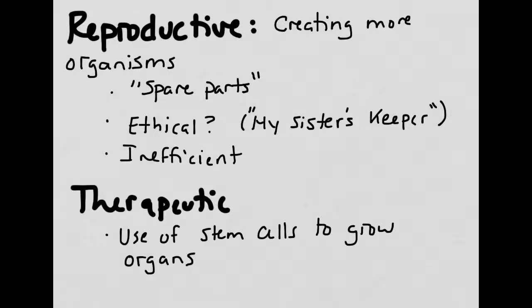Cloning can also be used in many therapeutic ways. For instance, you could use embryonic stem cells to grow whole organs from people who needed them, rather than having them wait on the donor list for a new heart, a new kidney, or a new liver. However, it's still important to consider the ethics of whether or not we should be using stem cells.